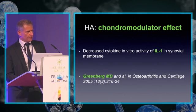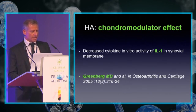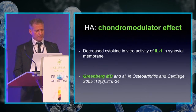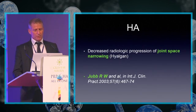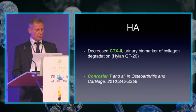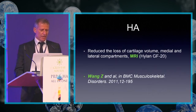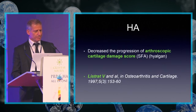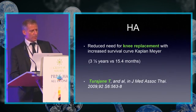HA chondromodulatory effects: HA decreased the in vitro cytokine activity of interleukin-1 in synovial membrane. HA decreased radiologic progression of joint space narrowing. HA decreased CTX-II urinary biomarker of collagen degradation. HA reduced the loss of cartilage volume in medial and lateral compartments on MRI. HA decreased the progression of arthroscopic cartilage damage score. HA reduced the need for knee replacement, with increased survival on Kaplan-Meier curves.